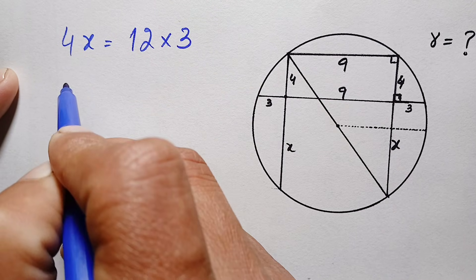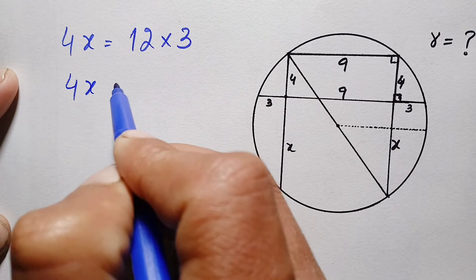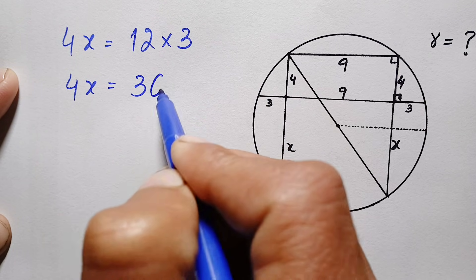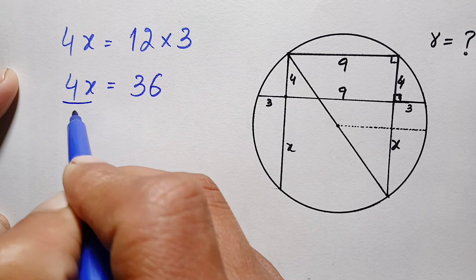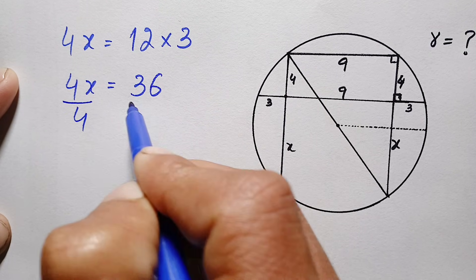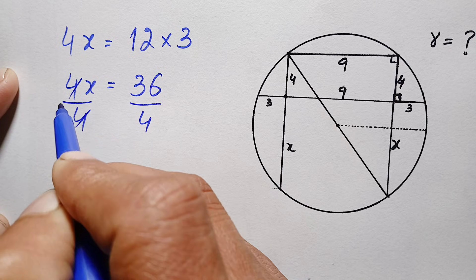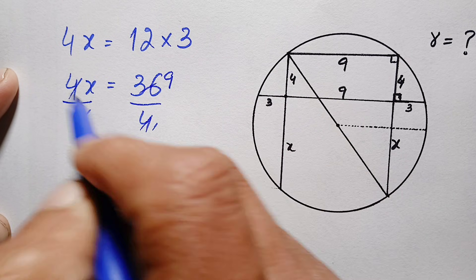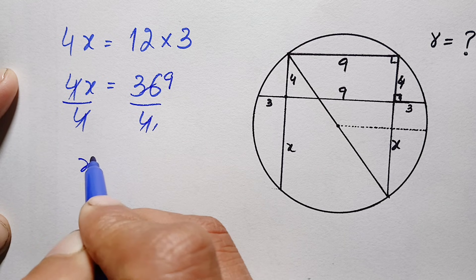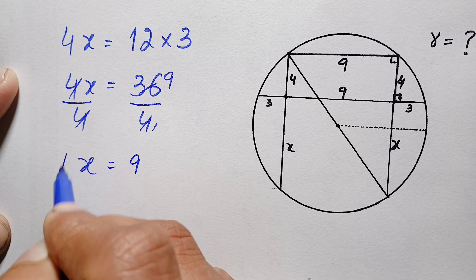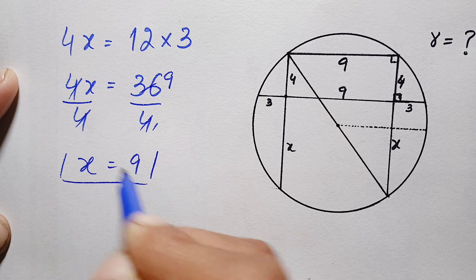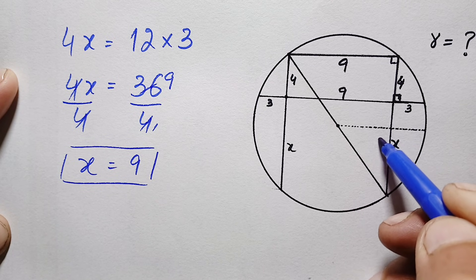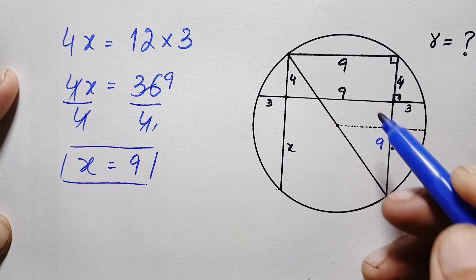This becomes 4x equals 36. Dividing both sides by four, four and four cancel, giving x equals nine. So the value of x is nine units — this is the length of this side.